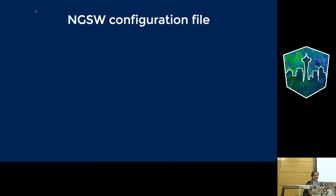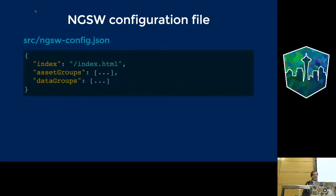How does Angular Service Worker know what to put in the cache? It's not smart enough to figure that out without hints, which is why we have a configuration file called ngsw-config.json. The default view you get after ng-add is smart enough to put at least the critical resources to run your app offline. Both the Angular Service Worker config and the Web App Manifest are designed to have smart defaults — you literally do nothing and get at least something.